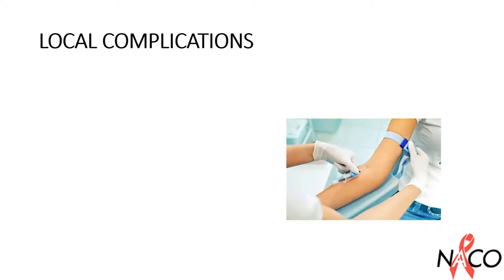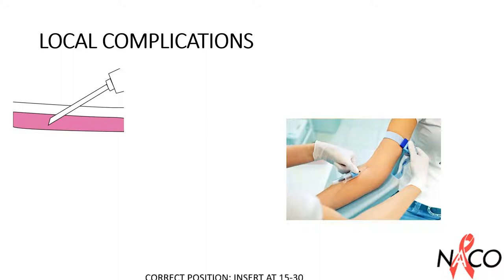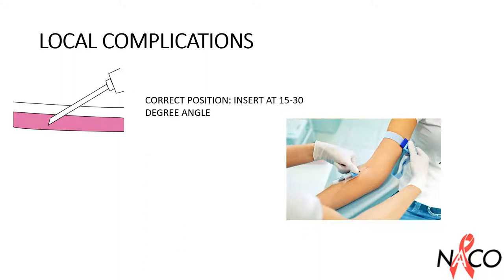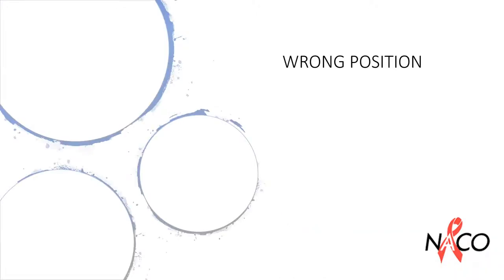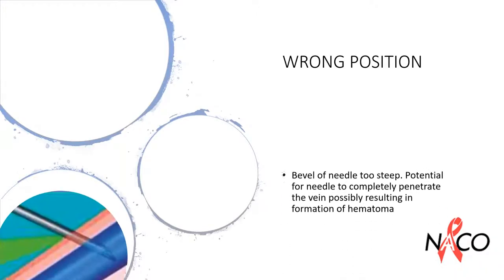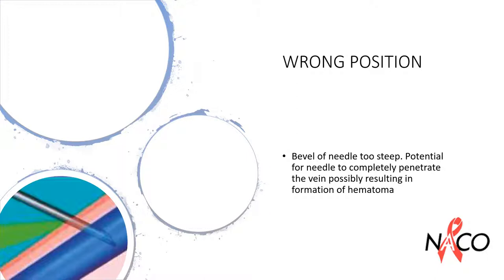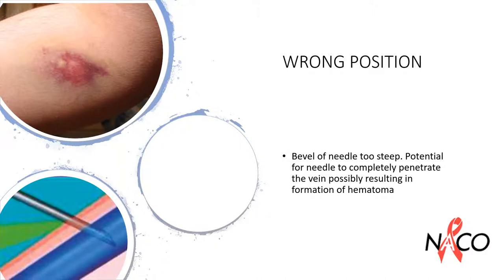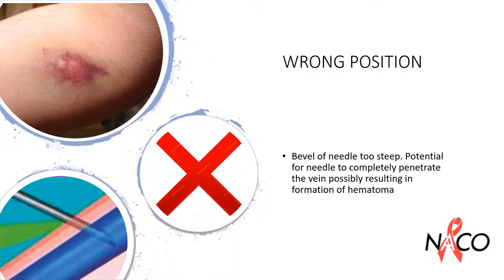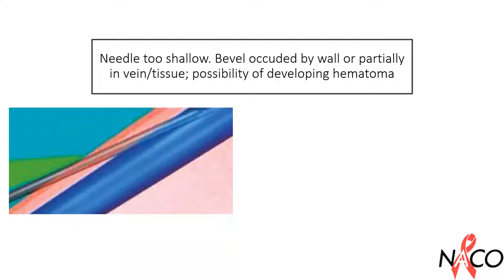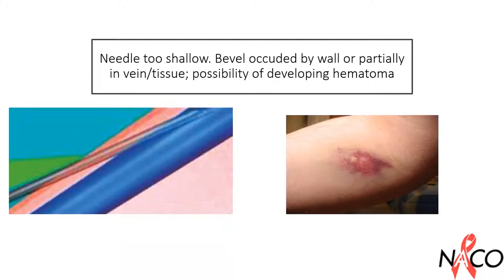Ideally the bevel of the needle should be fully inserted at a 15 to 30 degree angle. If the bevel is too steep, it is potential for the needle to completely penetrate the vein, possibly resulting in the formation of a hematoma. If the angle is too shallow, the bevel can get occluded by the wall or be partially in the vein or tissue, which can also lead to the possibility of developing a hematoma.